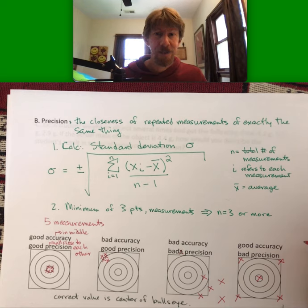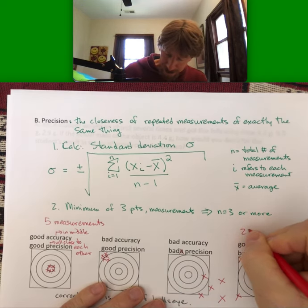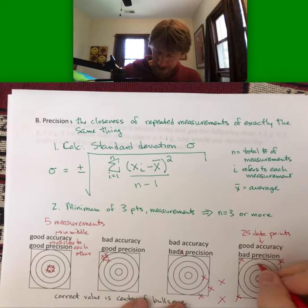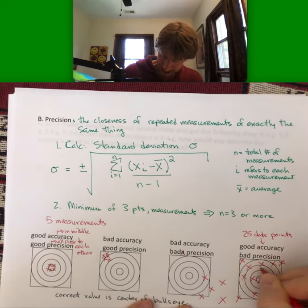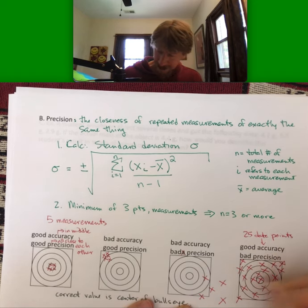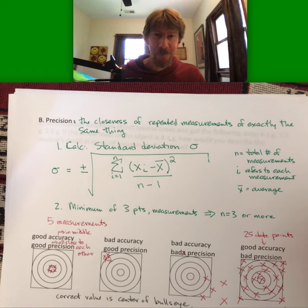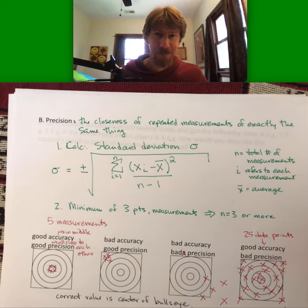I've done experiments where I had bad precision. What you do is instead of just five measurements, you actually do like 25 data points. For those 25 points spread out, I have a publication where we took 20 data points and were able to say our data was fairly accurate even though each individual point had pretty bad precision. That's the power of statistics — the power of having a lot of data means your average can be very good.